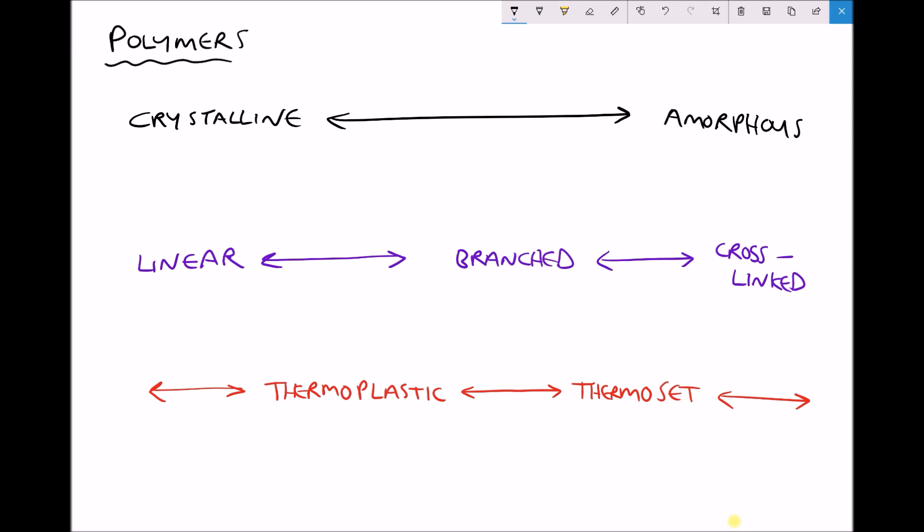I'm just going to use this slide to explain a few concepts and the first thing that we're going to talk about is the difference between crystalline and amorphous polymers. The first thing I want to point out is that this isn't a clearly defined distinction because most polymers will actually be semi-crystalline meaning they have regions which are crystalline and regions which are amorphous.